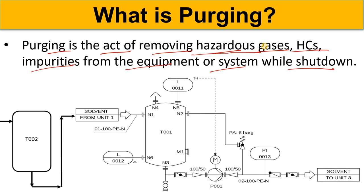Purging also helps to eliminate any combustible materials. You can simply say that it creates an inert environment. Now, which gas is used for purging? Most of the time you will see that nitrogen is used. As we discussed in our last videos, nitrogen is used as a purging medium. Air is also used, and sometimes steam is also used for purging — steam purging.